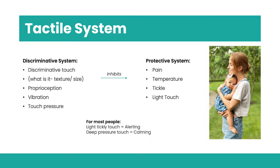The tactile system uses receptors from the skin and mouth to get sensory information, working along two pathways. The protective pathway identifies pain, temperature, tickle, and light touch, sending information very quickly to the brain to enable a protective response — often before we are even aware. For example, if you touch a hot radiator you move your hand automatically before thinking about it. The other pathway is the discriminative system — used when feeling for car keys in a handbag, detecting differences in texture, size, and temperature. The discriminative system controls or dampens down the protective system.